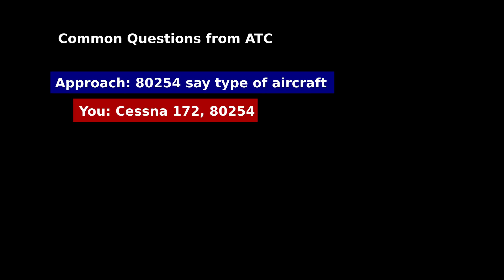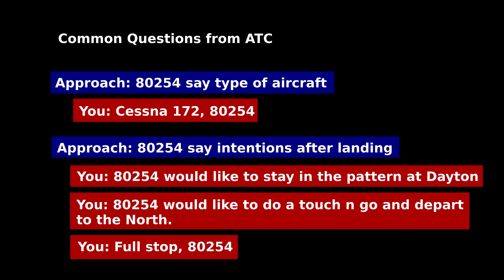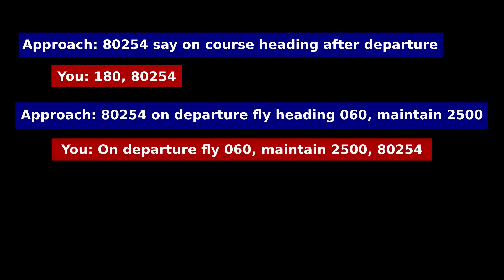Sometimes the controller will ask you questions if not everything made it through in the initial contact call. For example, you might hear 'say type of aircraft,' to which you would just reply Cessna 172, or you may be asked to say intentions after landing. Common answers are: I'd like to stay in the pattern, I'd like to do a touch and go and depart to the north, or simply full stop. If you're doing a touch and go, you might also be asked for your on-course heading after departure, or given a specific set of departure instructions — this is the controller planning ahead to avoid traffic conflicts on your way out.